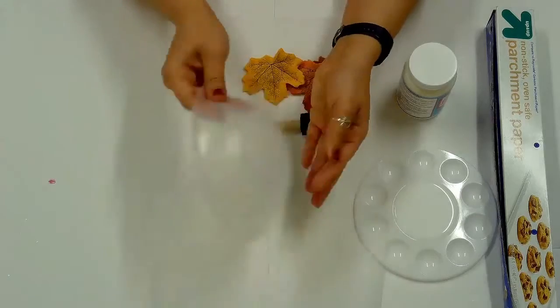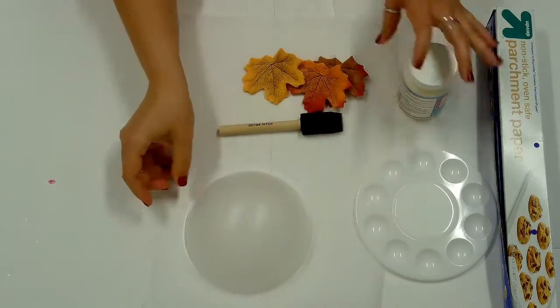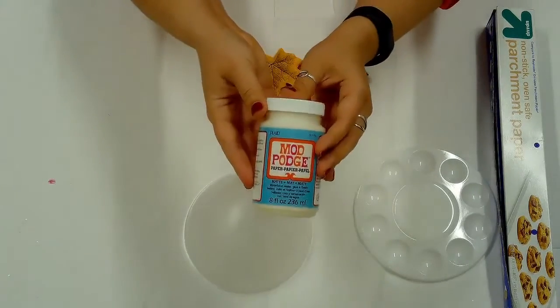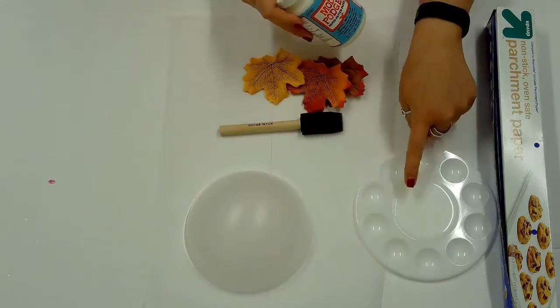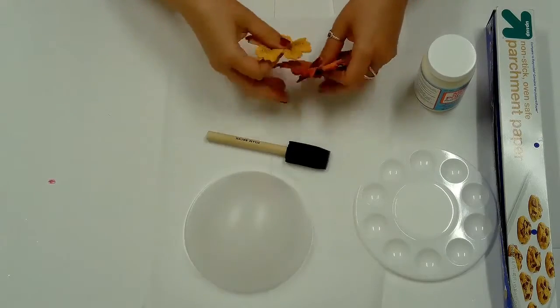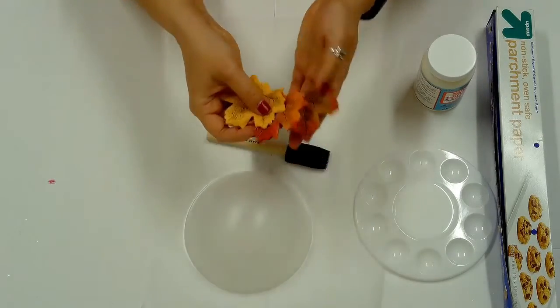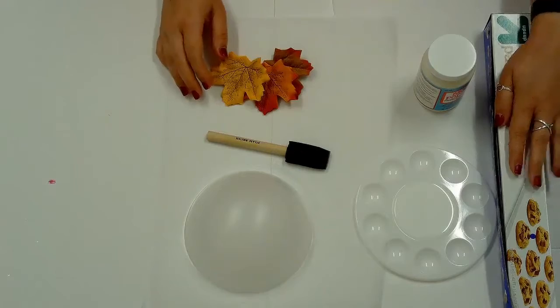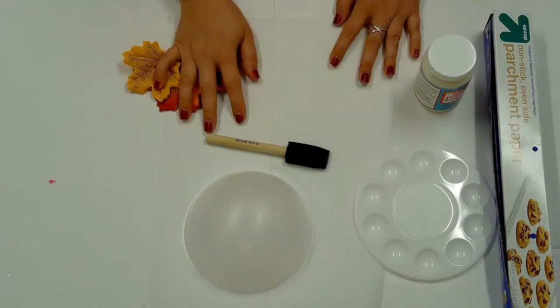Supplies include a plastic bowl form, mod podge, painter's palette for the mod podge, a foam brush, artificial fall leaves, and parchment paper to protect your surface. Let's get started.